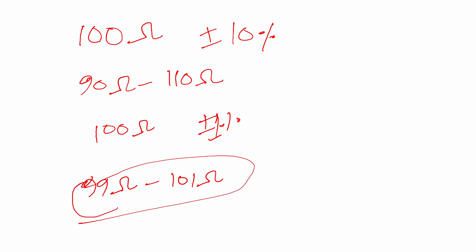You can get a more accurate value if you choose a 1 percent tolerance resistor. In that case you can use the E96 series which has 1 percent tolerance.